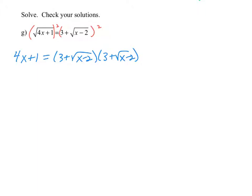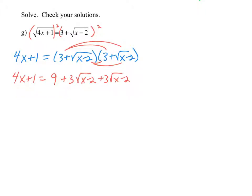This is going to involve quite a few steps. On the left side we still have 4x plus 1. Using FOIL: the first gives 3 times 3 is 9; the outer gives plus 3 times the square root of x minus 2; the inner gives plus 3 times the square root of x minus 2; and the last gives the square root of x minus 2 times the square root of x minus 2, which simplifies to x minus 2. Combining like terms on the right: 9 and minus 2 are constants that add to 7, and the two radical terms combine to 6 times the square root of x minus 2, plus x.